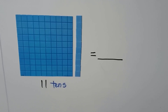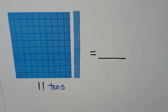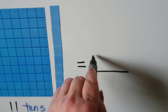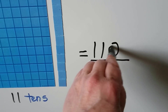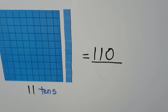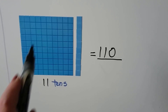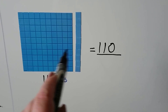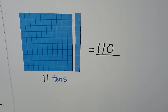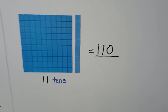Here we have eleven tens. We can say we have eleven tens and zero ones. We have one hundred ten. Ten tens is one hundred and another ten is one hundred ten — that's eleven tens.